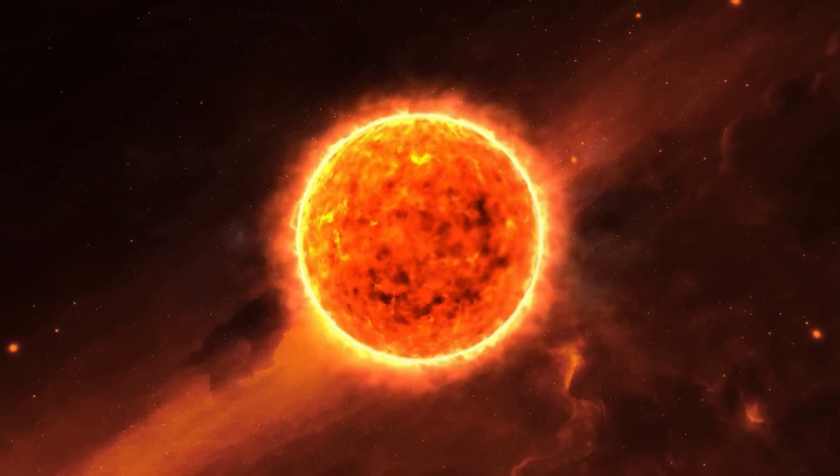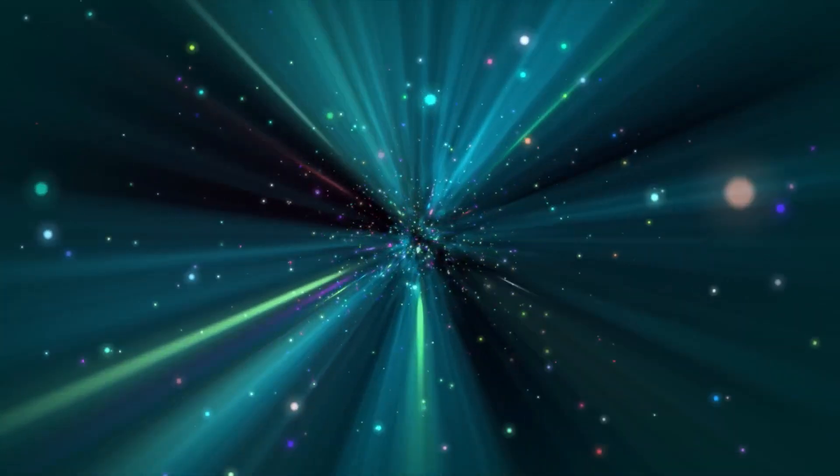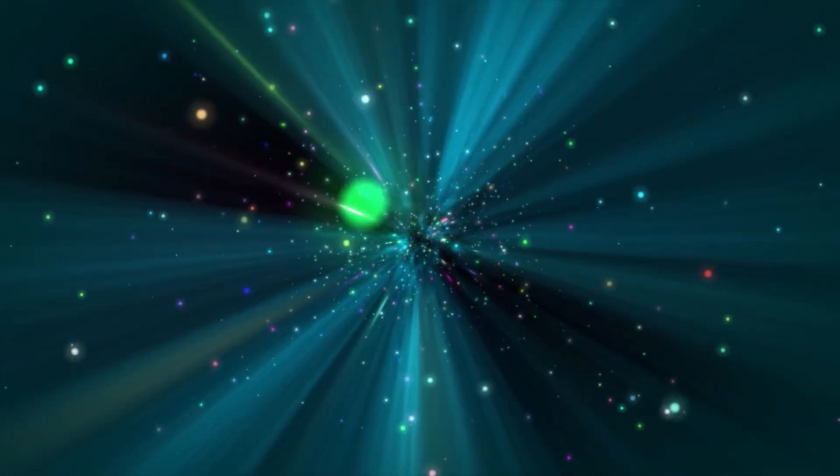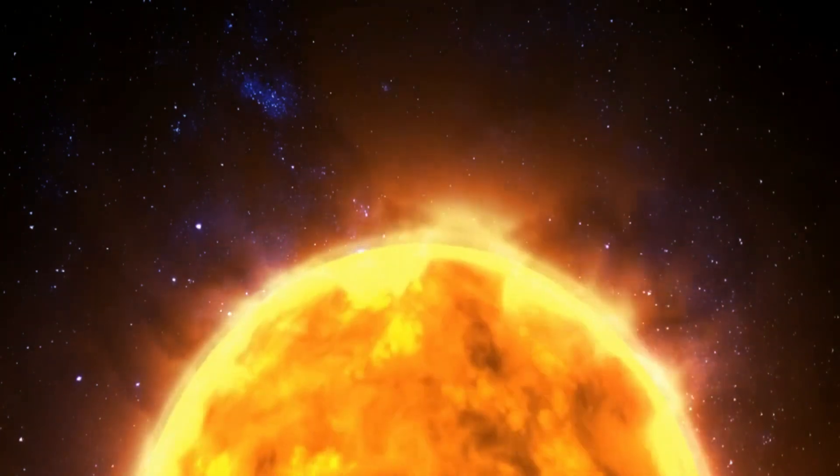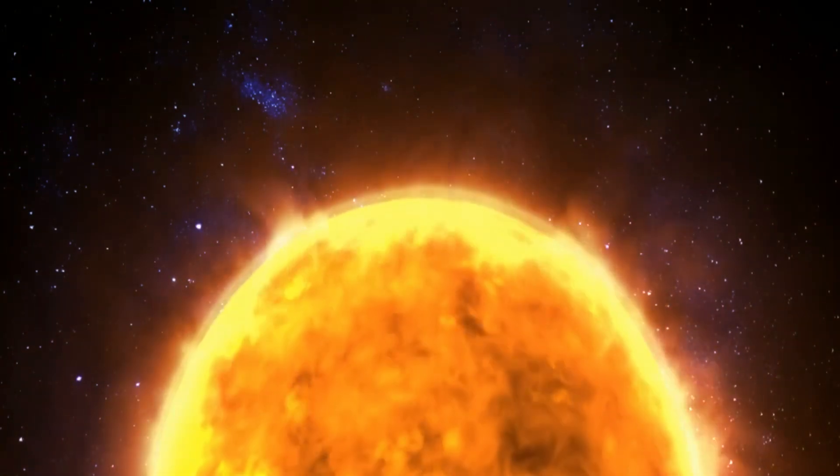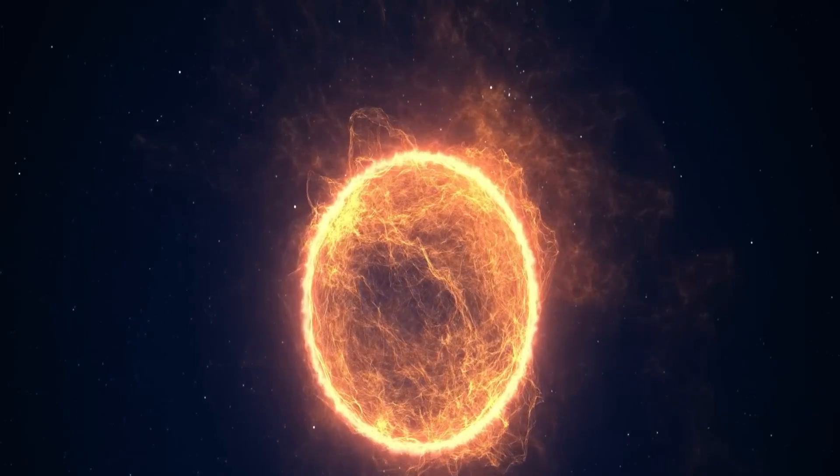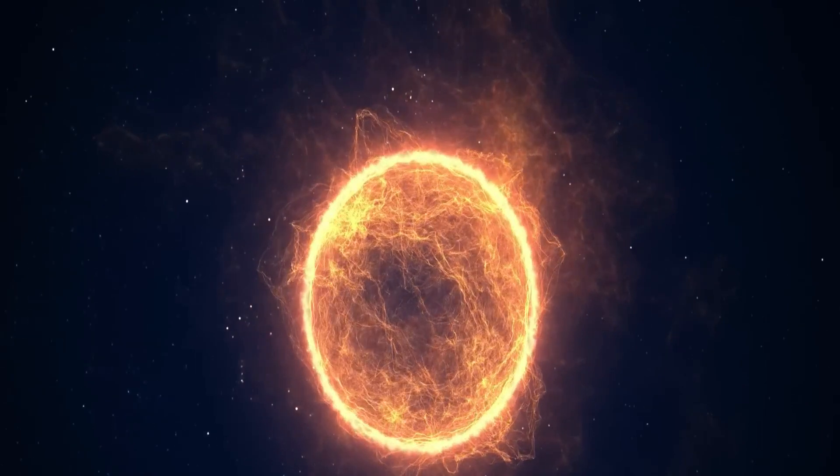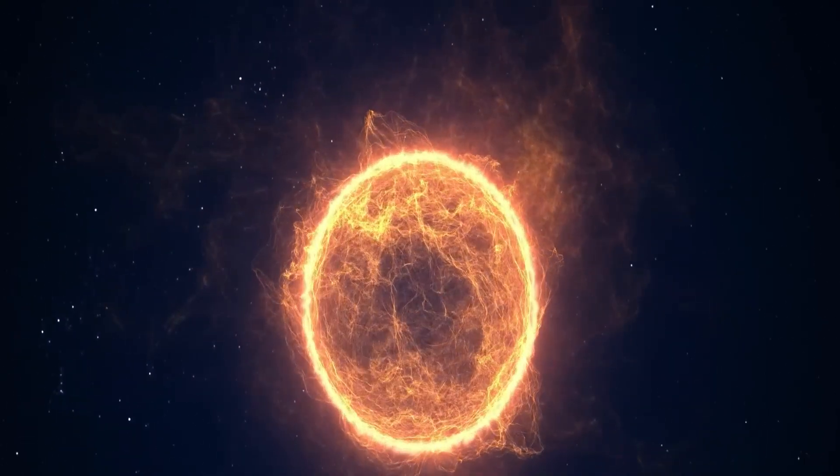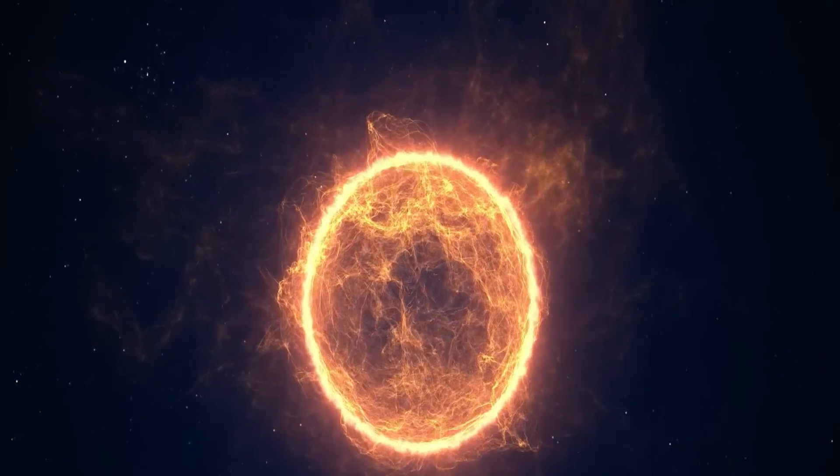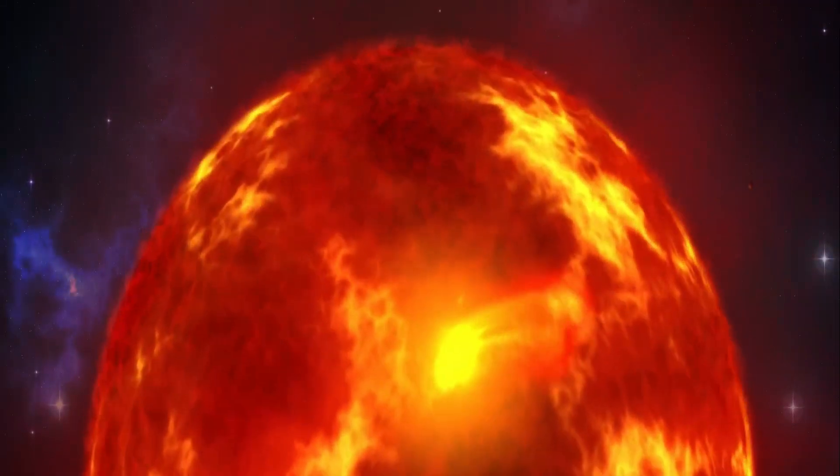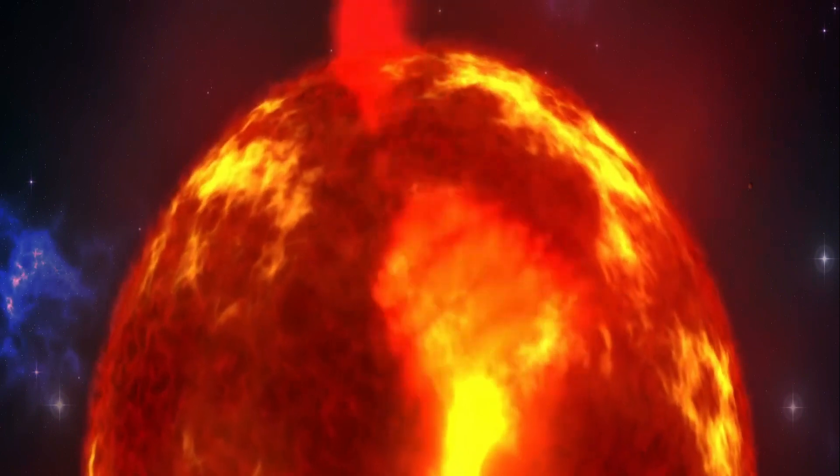Betelgeuse, as described by physicist Michio Kaku, is a fascinating cosmic giant that has intrigued astronomers for a long time. It was first spotted by the Greek astronomer Ptolemy. This massive star is so prominent that you can spot it in the night sky from Earth during the winter months. If you're into stargazing and constellations, you've likely come across Betelgeuse. It's that reddish-orange star marking the upper left shoulder of the Orion constellation. This star has been around for eons, and even today, it remains one of the brightest stars visible at night.